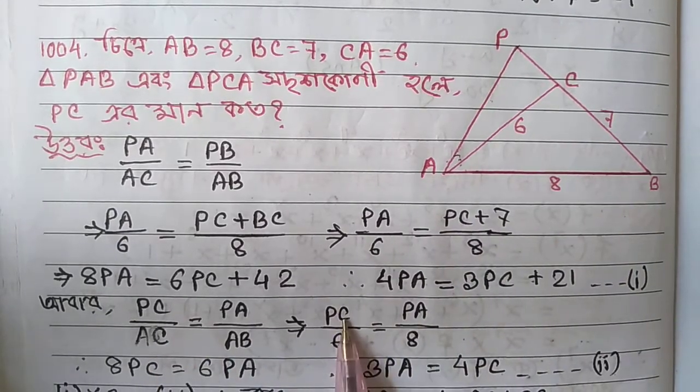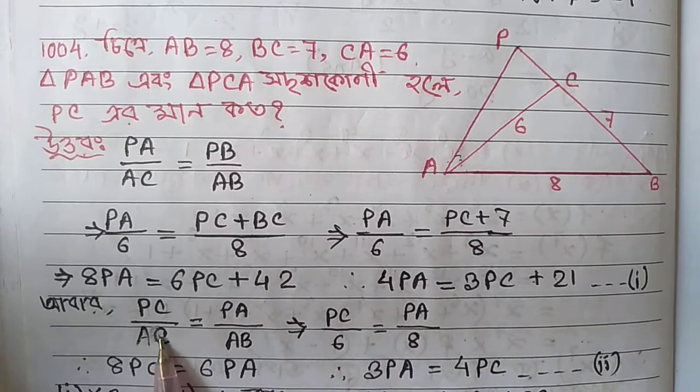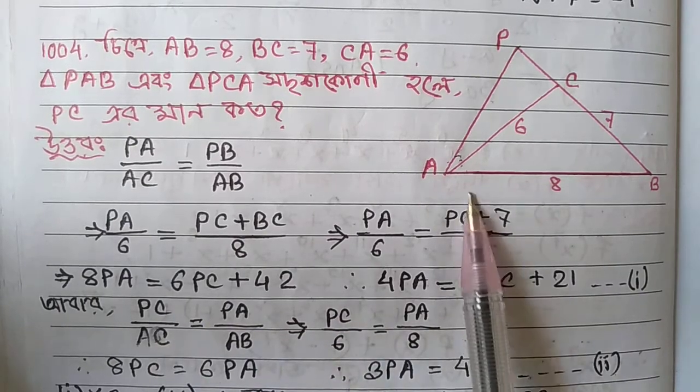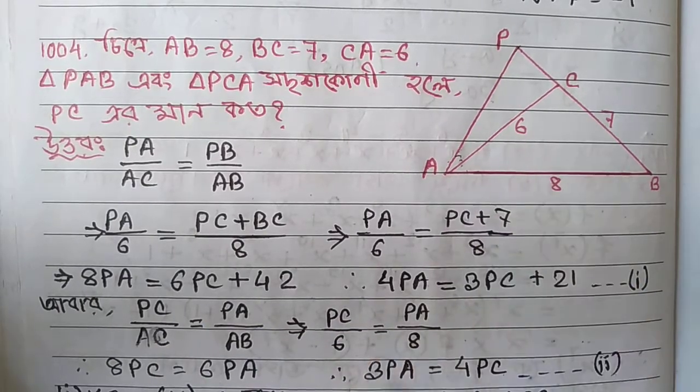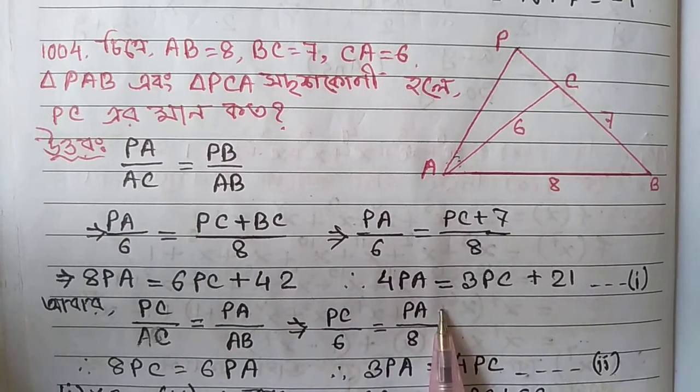This is PA equals AB. So P3 equals P3 equals A. Therefore P3 equals A.